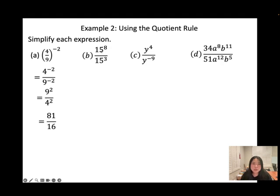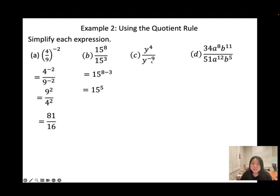For b, apply the Quotient Rule — they have the same base of 15, so subtract the exponents: 15 to the power of 8 minus 3. For c, there's a negative exponent on the denominator — you can flip it to the top to make it positive, or use the Quotient Rule: 4 minus negative 9, which gives y to the power of 13.